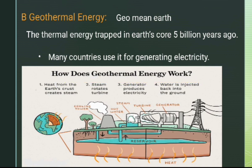Heat from the Earth's crust creates steam. The steam rotates turbines. The turbines drive a generator which produces electricity. Water is then injected back into the ground. Many countries use geothermal energy for electricity generation.